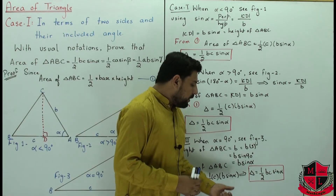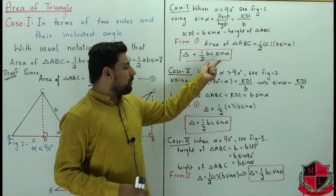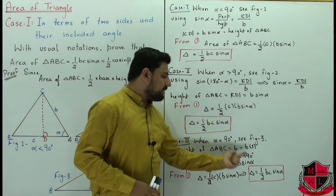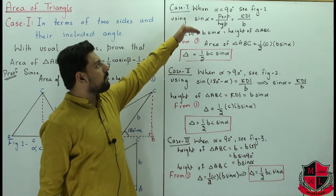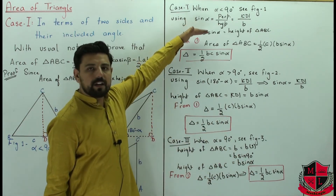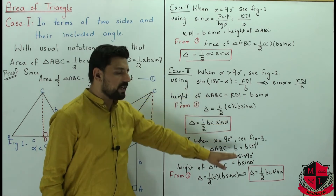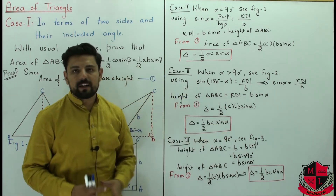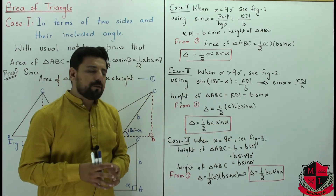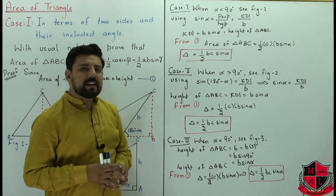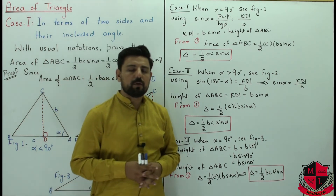So we see that in all three cases — whether α is less than 90°, greater than 90°, or equal to 90° — the area formula is ½·bc·sin α. We have proved that when we consider side BC and angle α, this formula holds universally.